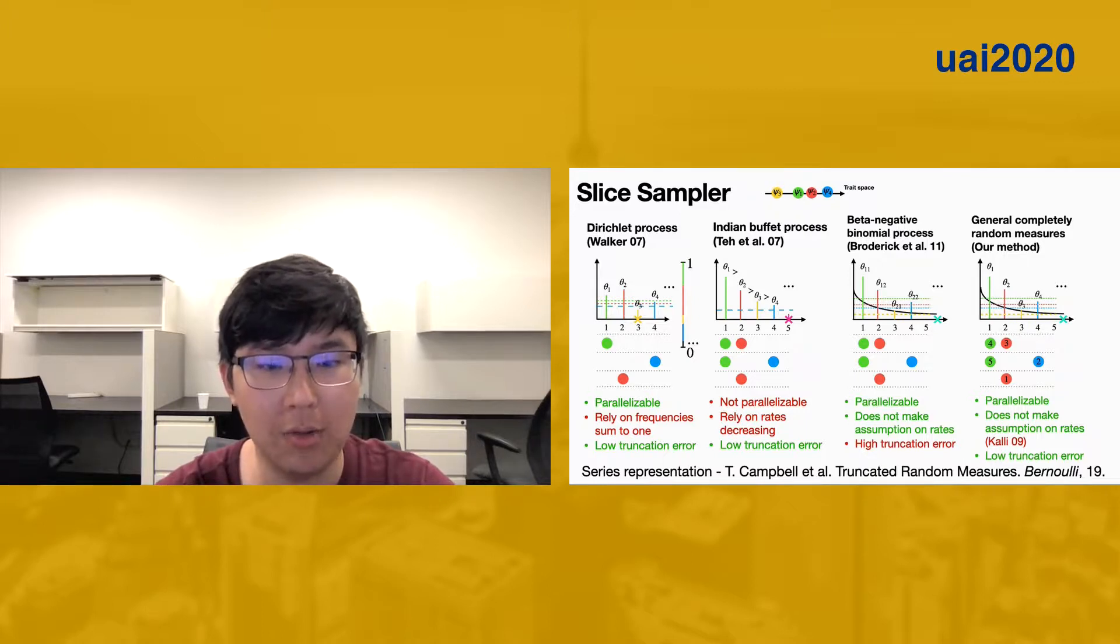If you are interested in how this is done, please come to the poster after my presentation. Unlike the method that draws a single auxiliary variable out of all rates by Teh et al., we generate independent draws of auxiliary variables, and our algorithm is therefore parallelizable.